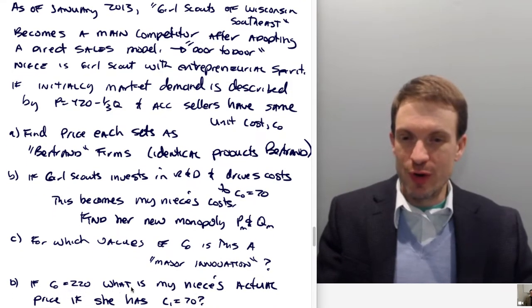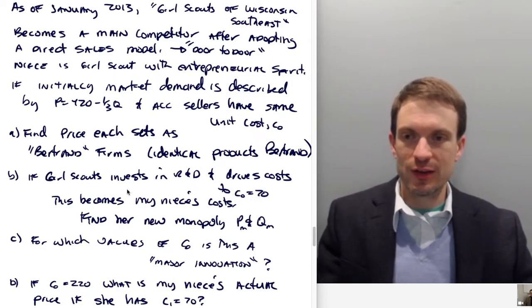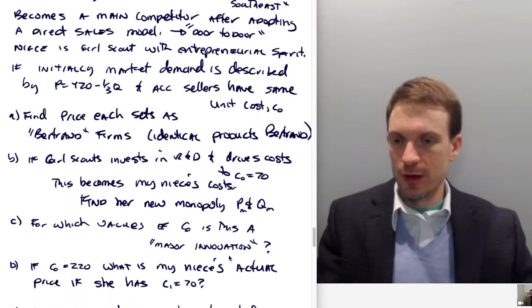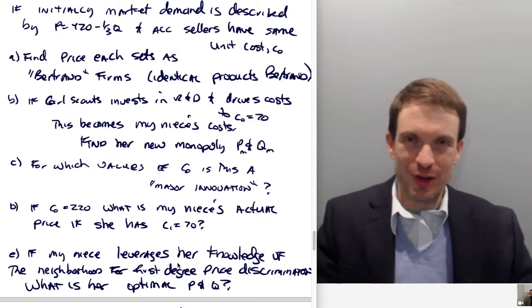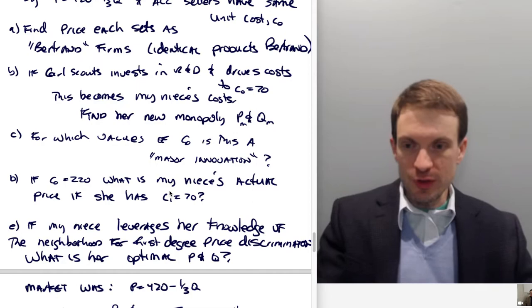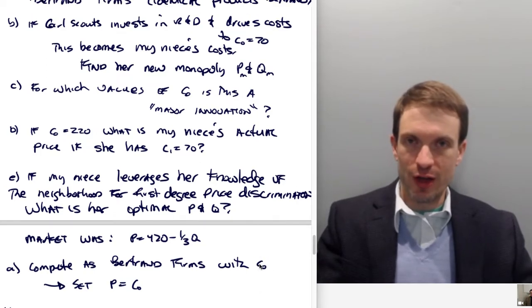If C₀ equals $220, what is my niece's actual price if she has costs of $70? Let me clarify: this is only driving down Girl Scouts costs. Rippin' Good Cookies costs stay at C₀. And if my niece leverages her knowledge of the neighborhood for first-degree price discrimination, what is her optimal pricing and quantity? The market demand was 420 - (1/3)Q. Competing as Bertrand firms with everybody having costs of C₀, this involves setting price equal to C₀. Identical products Bertrand assumes we set price equal to marginal cost,